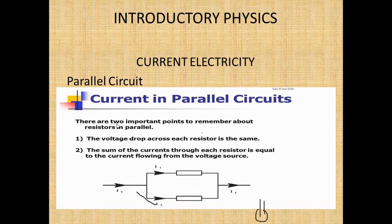A very important point about parallel circuits that we will use when doing calculations: the voltage drop across each resistor is the same. The voltage drop across one resistor equals the voltage drop across another. Voltage drop V = IR, which equals the current flowing through that branch times the resistance of that device.